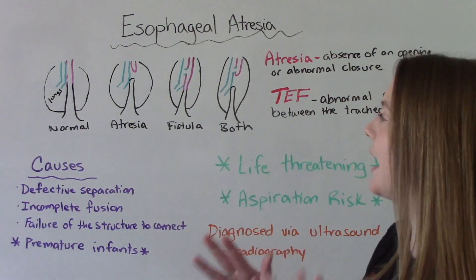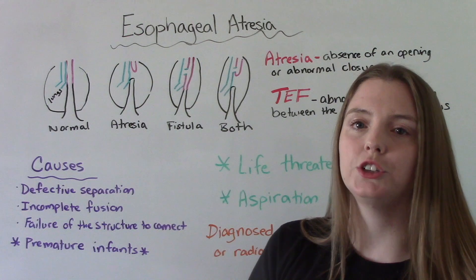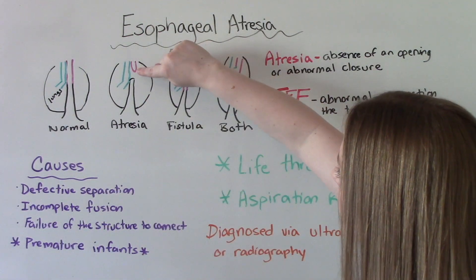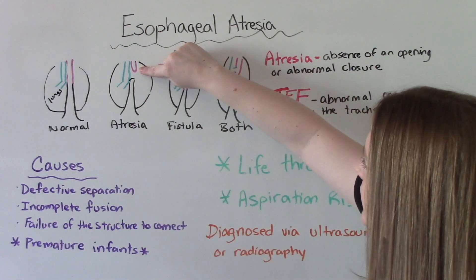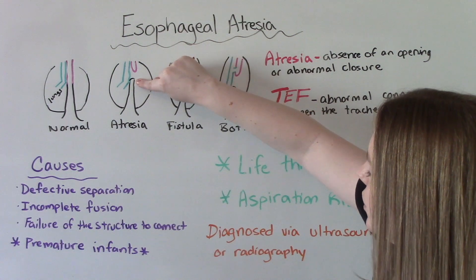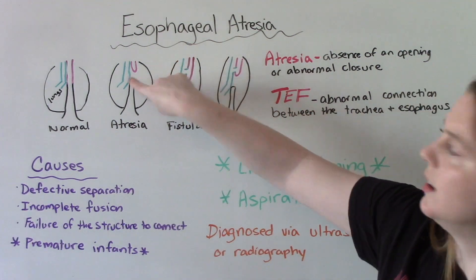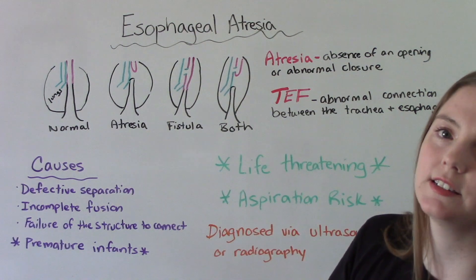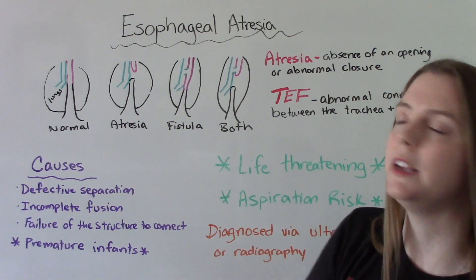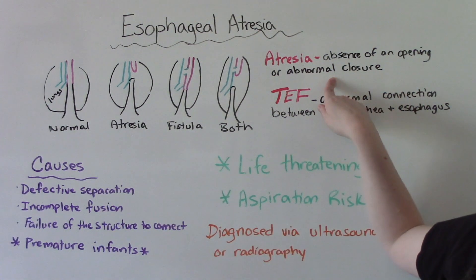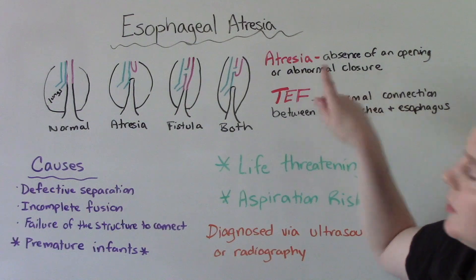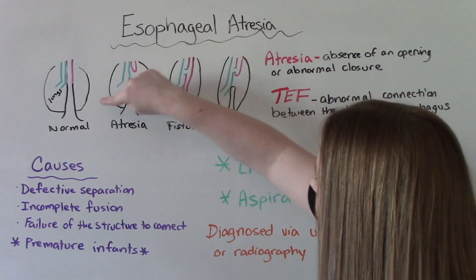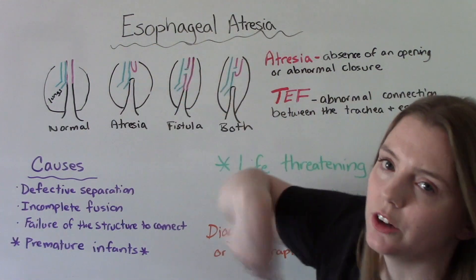So when somebody has an esophageal atresia, that connection from the upper portion of the esophagus to the lower portion is not there. There is a little pouch there that should not exist — that's what we mean by abnormal closure. So this little pouch is here in an atresia, and the trachea over here is still normal.